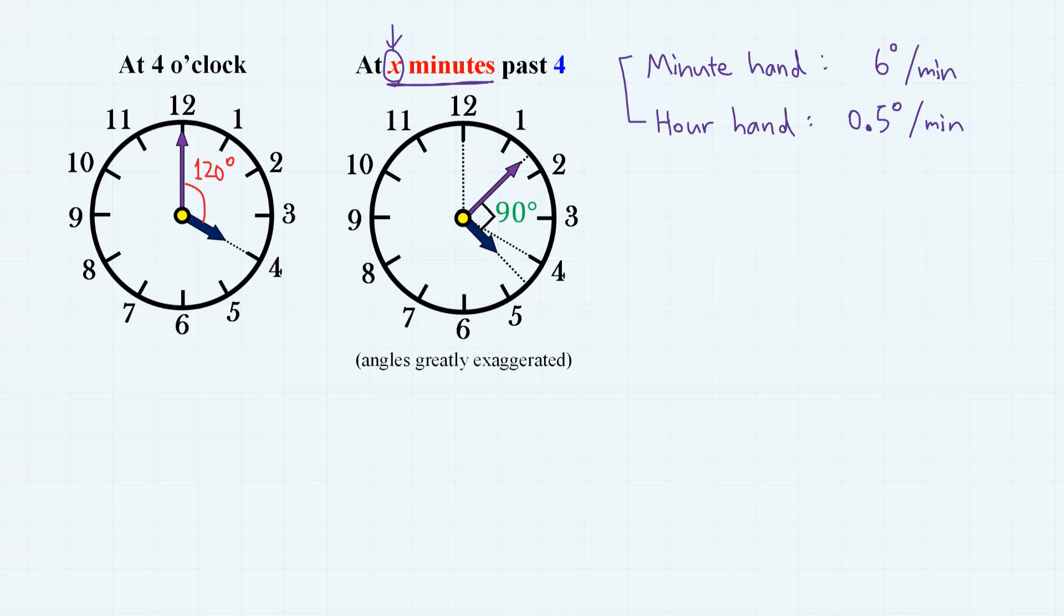Since 4 o'clock, the minute hand rotates by this much for duration of x minutes. So this angle right here must be 6x degrees. And the hour hand starts from the position of 4 and rotates this much. Using our 0.5 degrees per minute, this angle right here is 0.5x degrees.